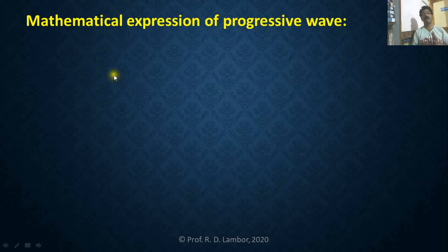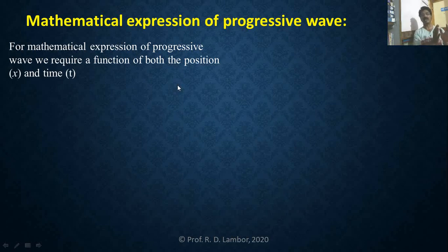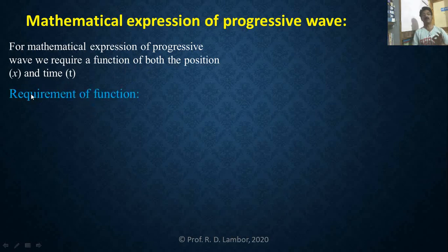For the mathematical expression of progressive wave, we require a function — a function of both position and time, where position means distance of the particle from the source. The requirements that this function should satisfy are what we now consider.